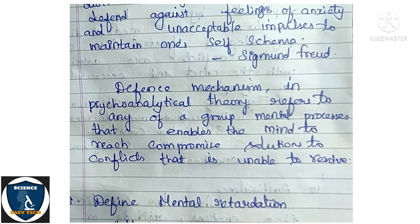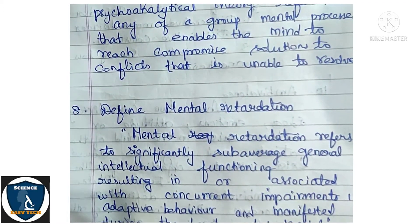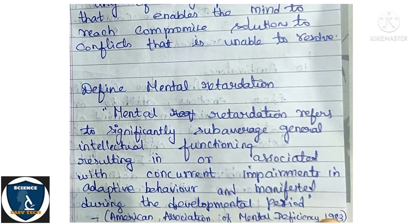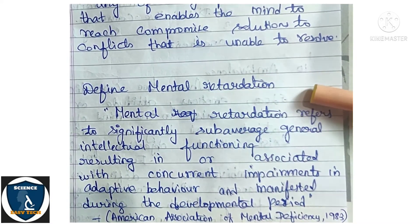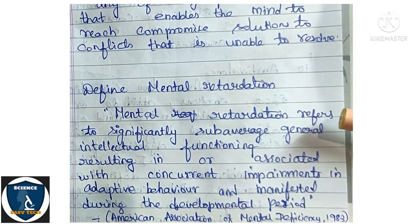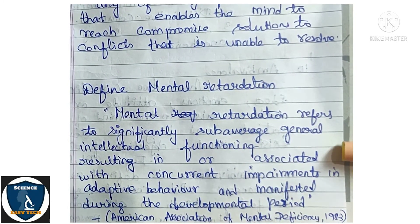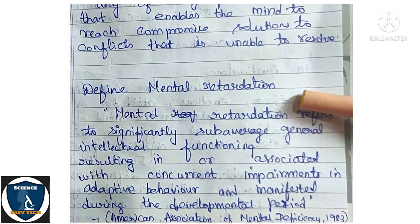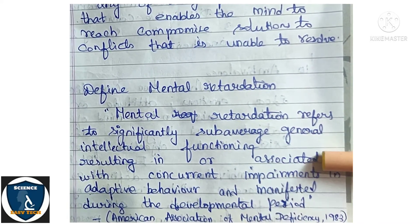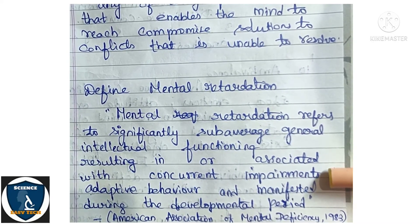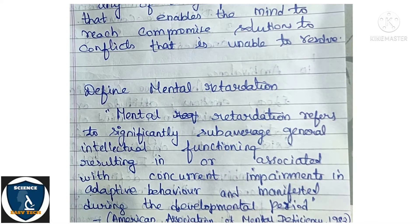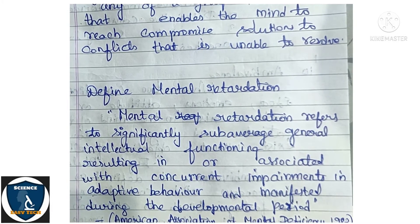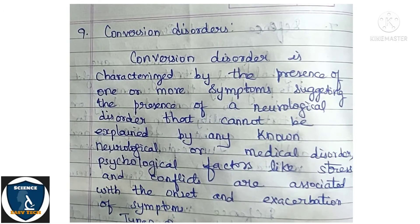Eighth question: Define mental retardation. According to the American Association of Mental Deficiency (1983), mental retardation refers to significantly sub-average general intellectual functioning resulting in or associated with concurrent impairments in adaptive behavior, manifested during the developmental period.